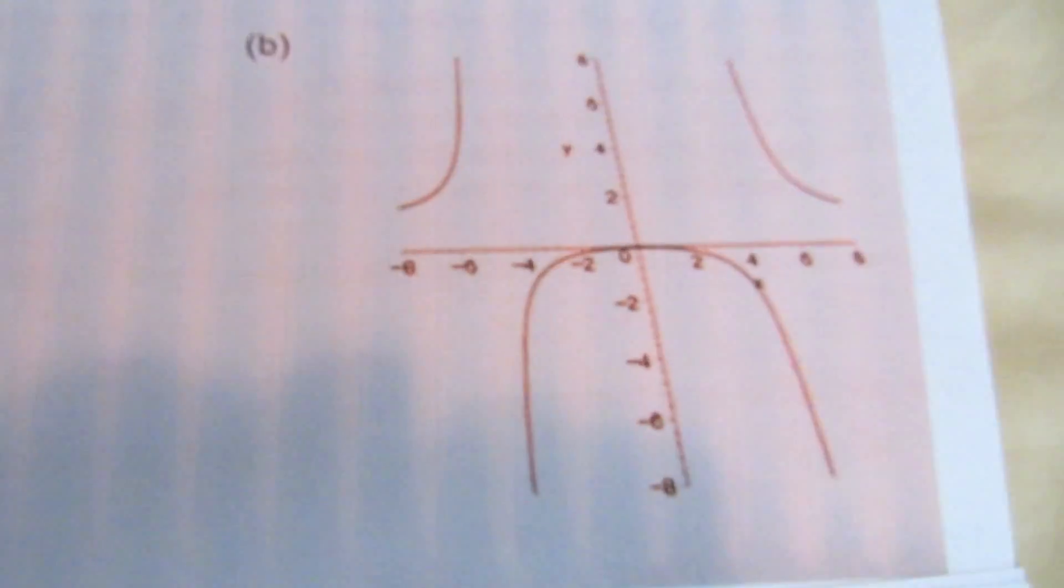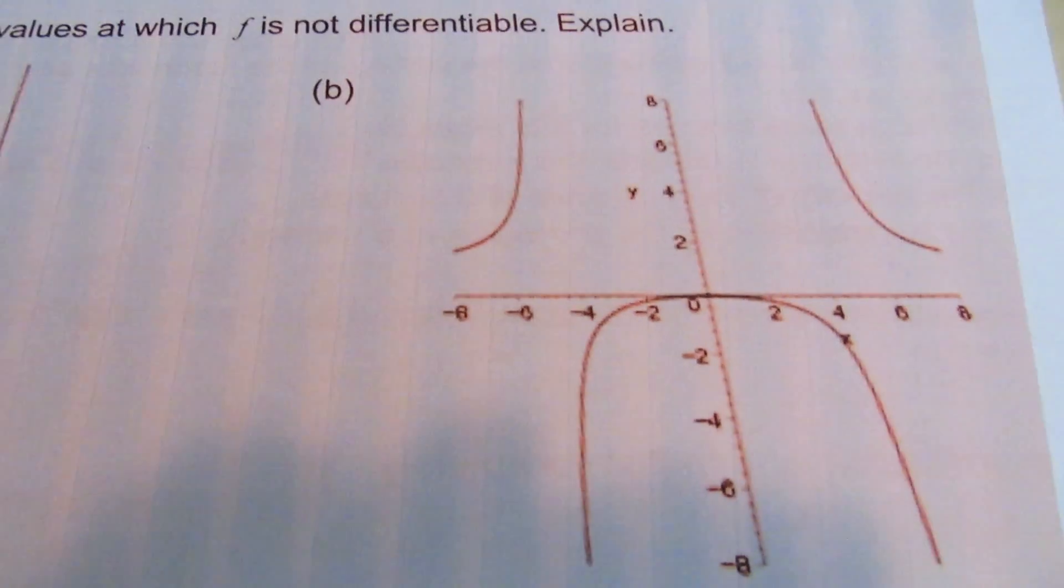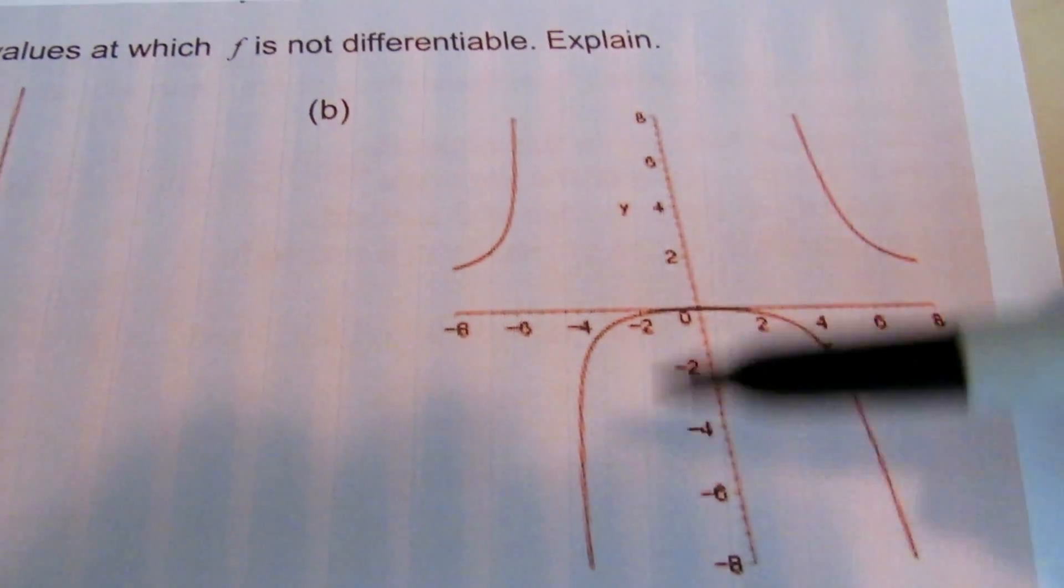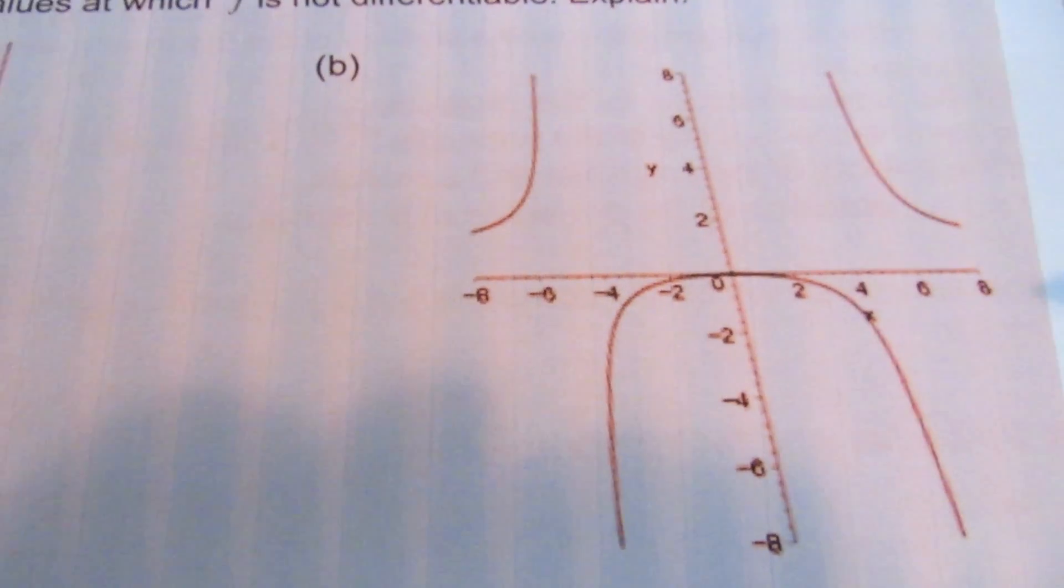For part b, you do the same thing. You look to see if there's any sharp turns. You look along the graph, there are no sharp turns.